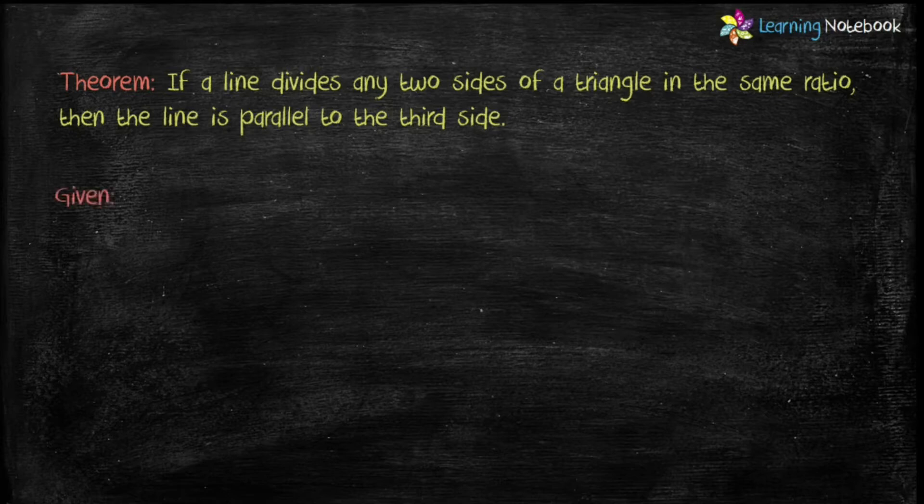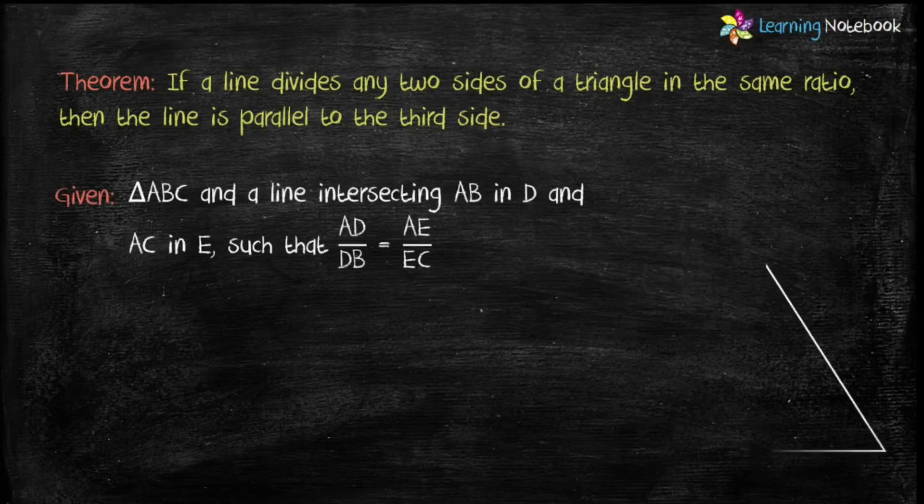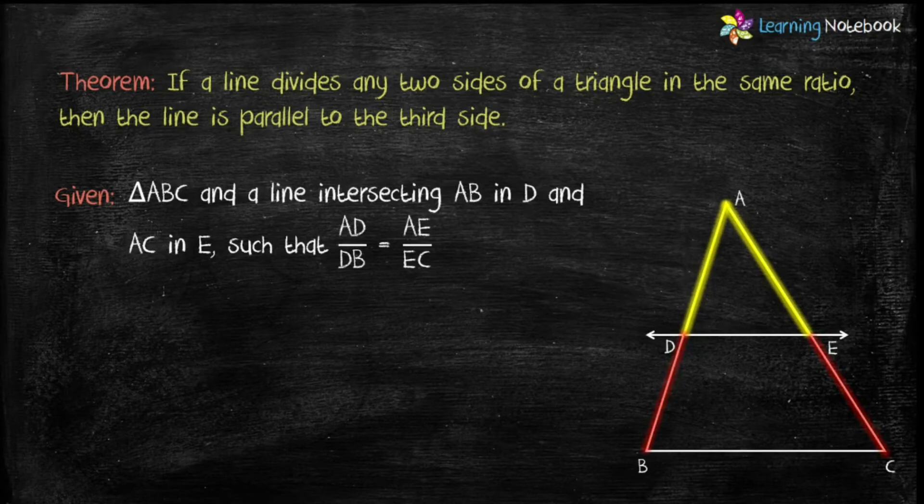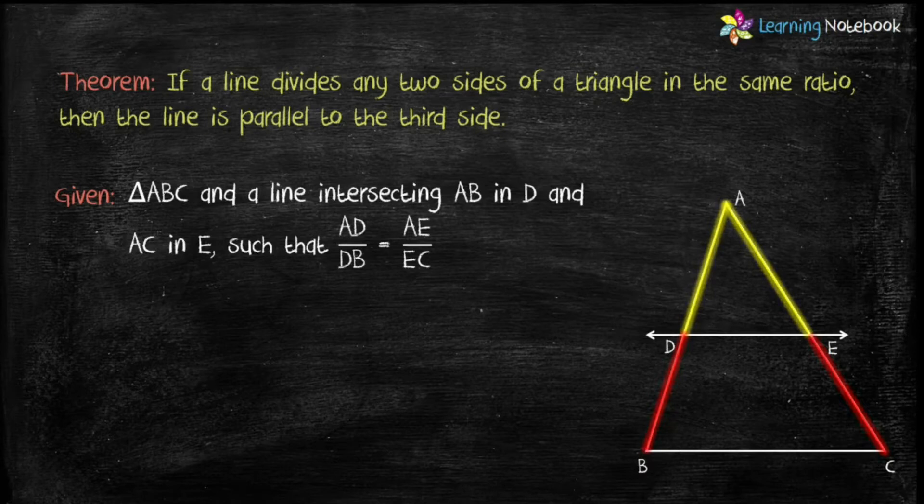Students, let's prove this theorem. We are given a triangle ABC and a line intersecting AB and AC such that AD by DB equals AE by EC. And we have to prove DE is parallel to BC.